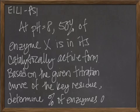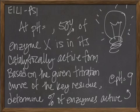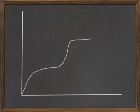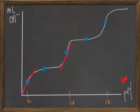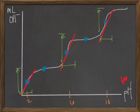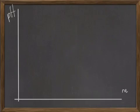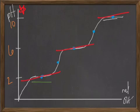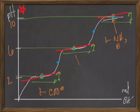So consider this practice question. At pH of 8, 50% of the enzyme X is catalytically active. Based on the given titration curve of the key residue, determine the percent of enzymes that are active. And they gave us a titration curve. And notice that there are two ways that you can get the titration curve.